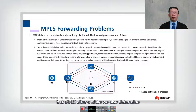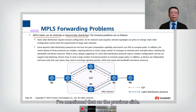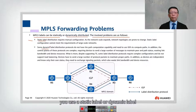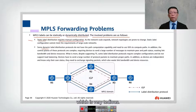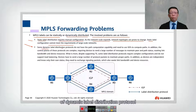After a while, problems with MPLS forwarding were identified. MPLS labels can be statically or dynamically distributed. With static labels, it requires a lot of manual configuration, which is very tedious. As the network scales or expands and topologies change, static labels cannot meet requirements. That is why a dynamic label distribution protocol — LDP — is needed.